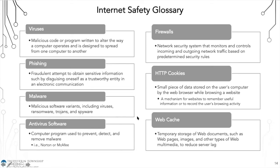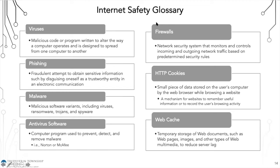Malware is malicious software which includes viruses, ransomware, trojans, and spyware. Antivirus software is a computer program used to prevent, detect, and remove malware — examples include Norton or McAfee. Windows computers still have a free version of antivirus software. Macs have pretty strong built-in security and don't require you to actively scan for updates — Macs are generally quite secure.